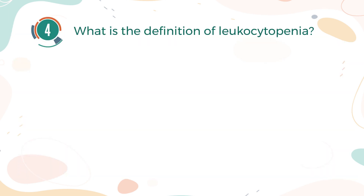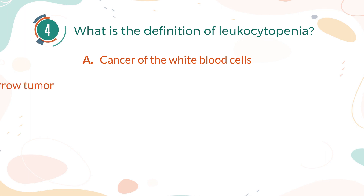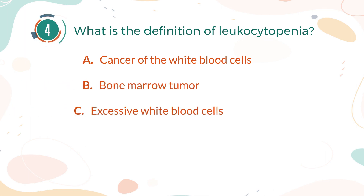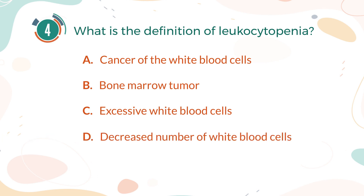Number 4. What is the definition of leukocytopenia? A. Cancer of the white blood cells. B. Bone marrow tumor. C. Excessive white blood cells. D. Decreased number of white blood cells.